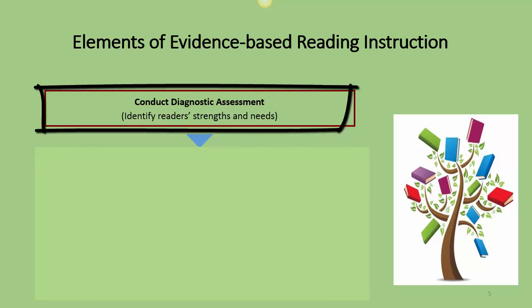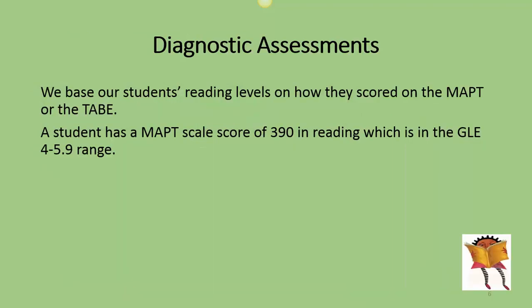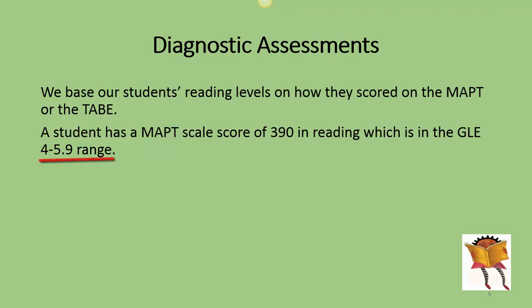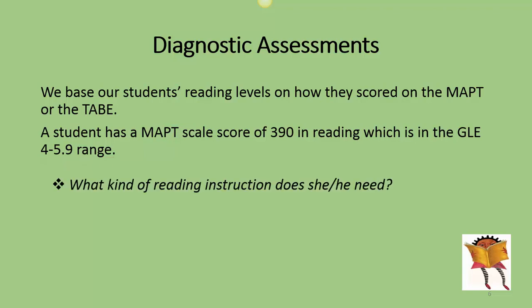We're focusing on this particular element: diagnostic assessment. We base our students' reading levels on the MAP score, or if you administer the TABE. A student has a MAP scale score of 390 in reading, which is the GLE 4 through 5.9 range. What kind of reading instruction does he or she need?